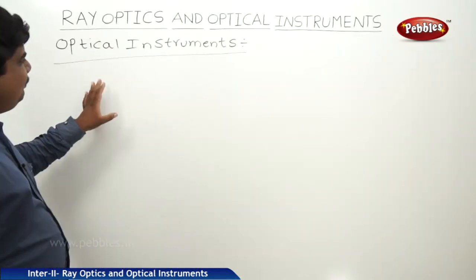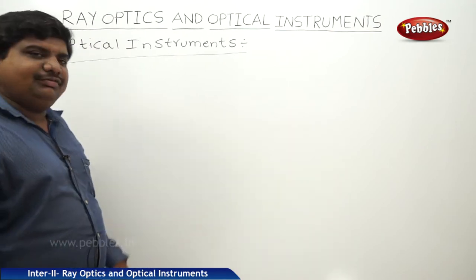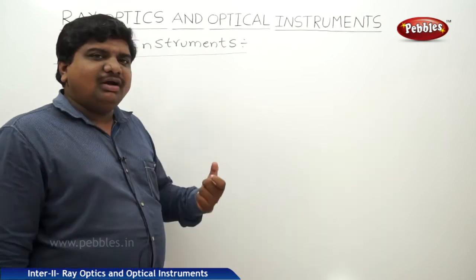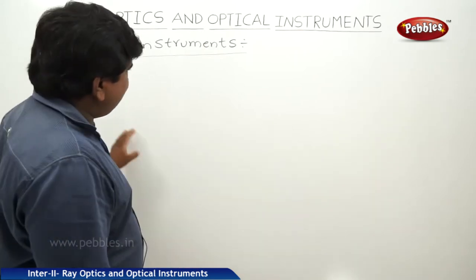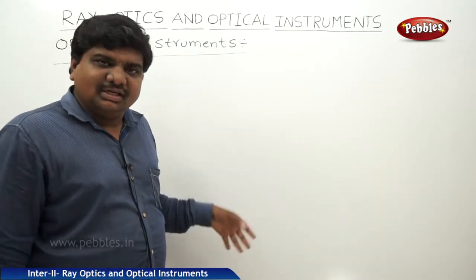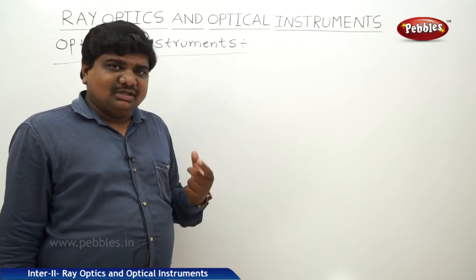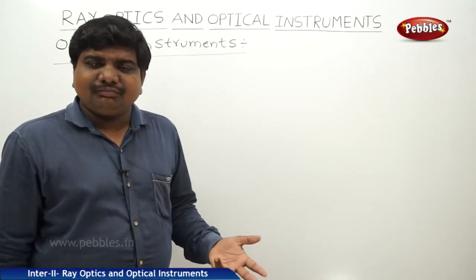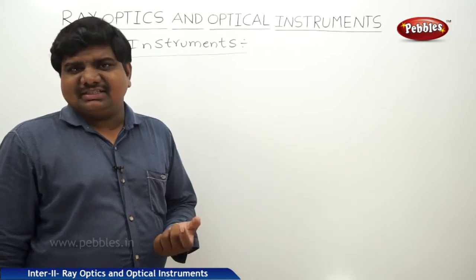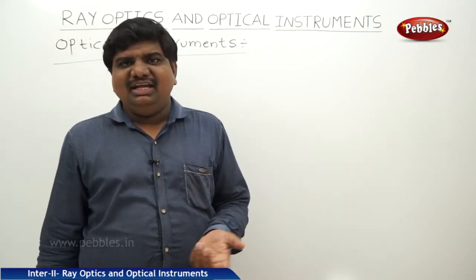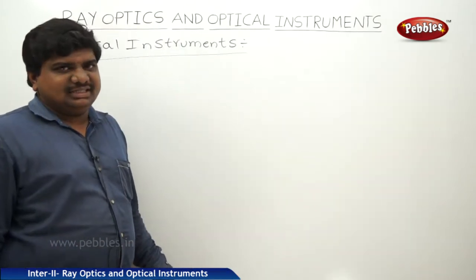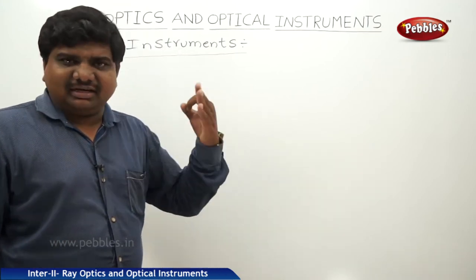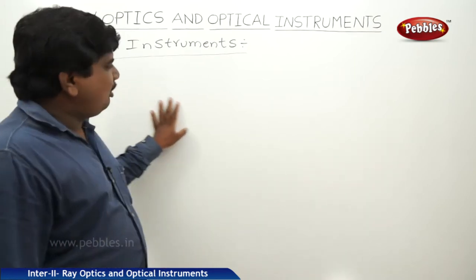Now we will discuss optical instruments. Optical instruments are devices that respond to the optical phenomena of light. When light is incident on such instruments, they respond and exhibit different phenomena of light like reflection, refraction, magnification, linear magnification, angular magnification, and visibility of the image. Instruments that exhibit natural phenomena of light upon the incidence of light are called optical instruments.